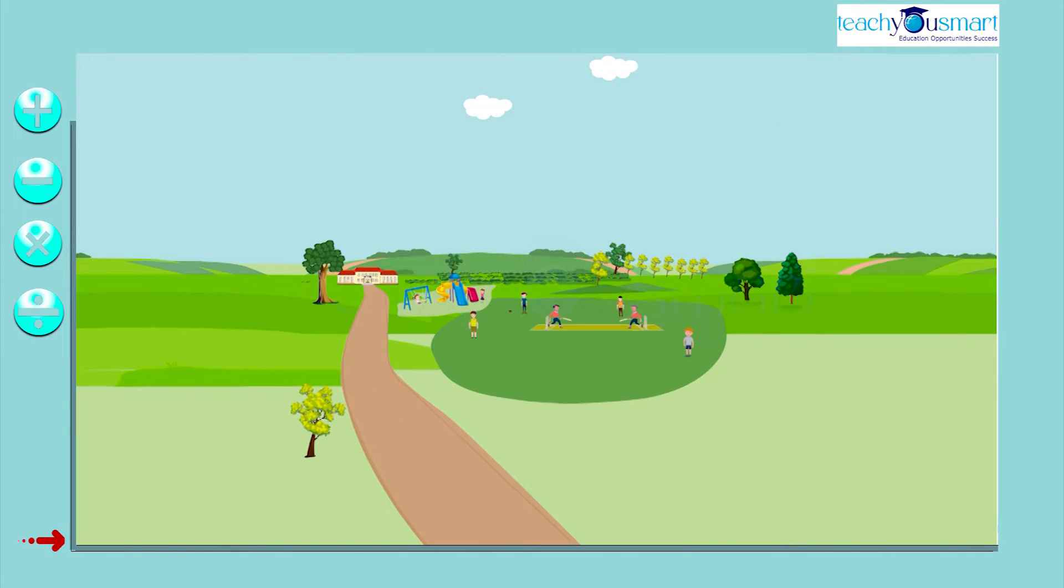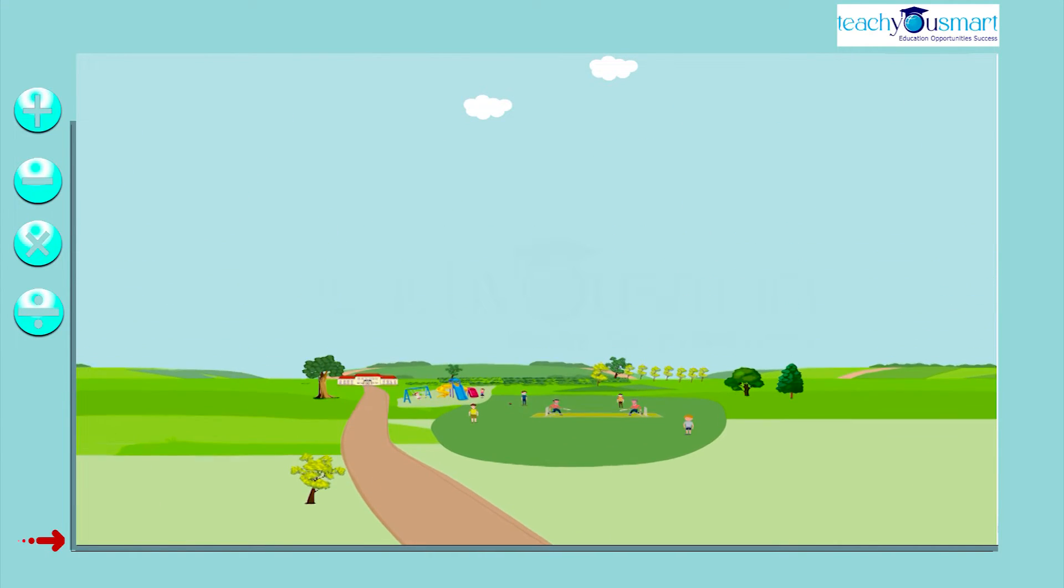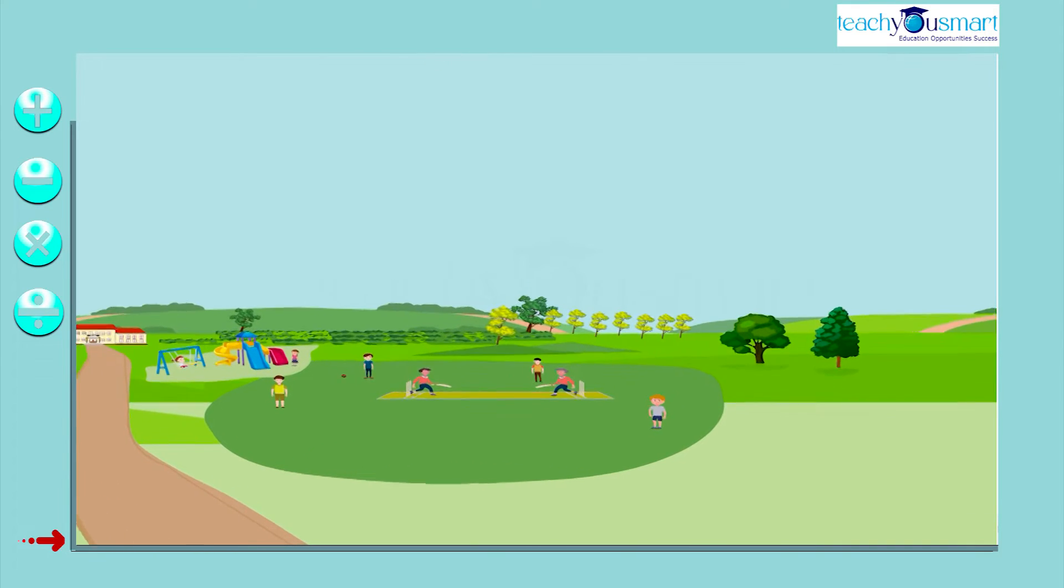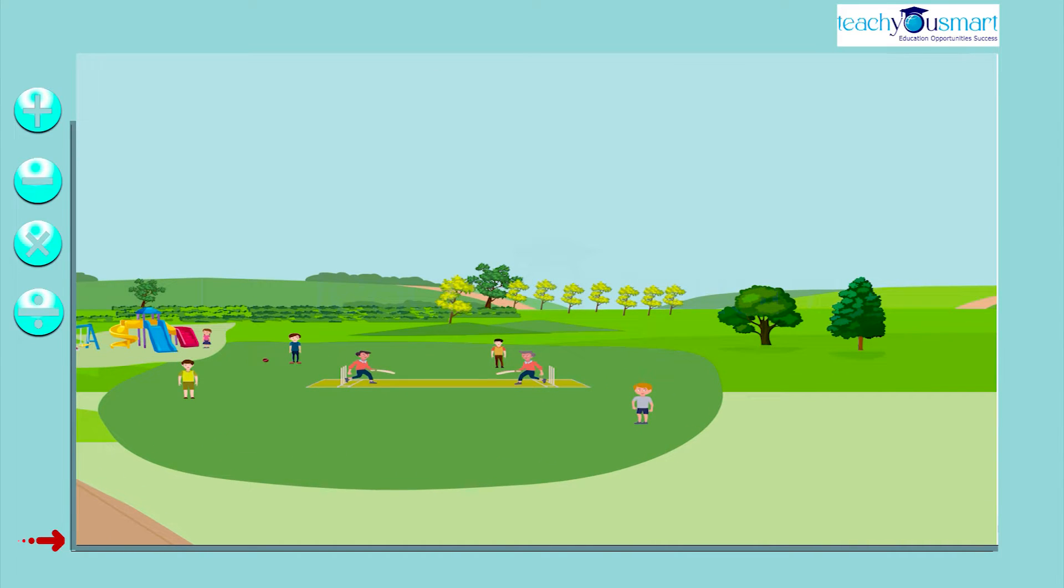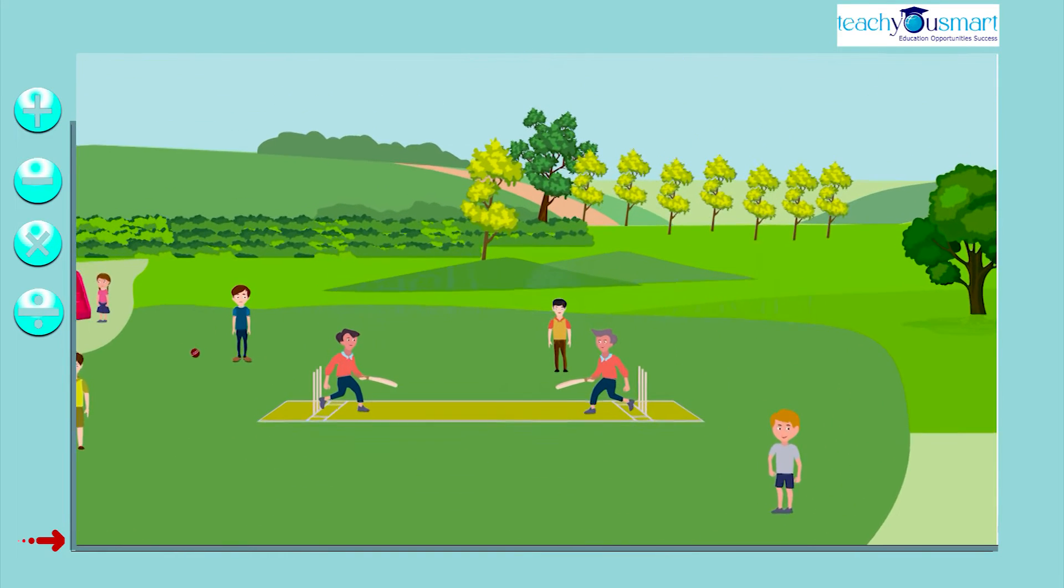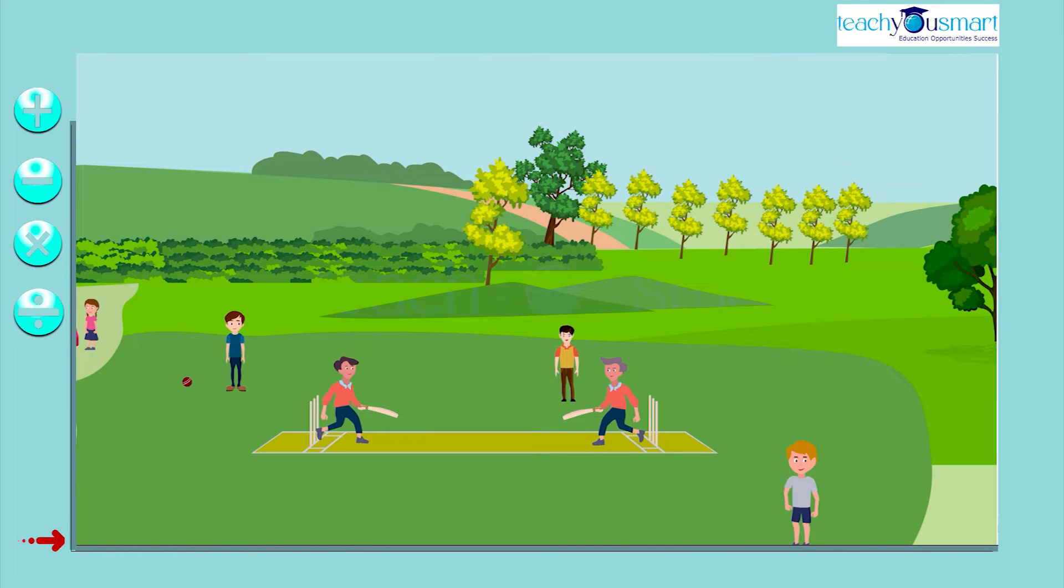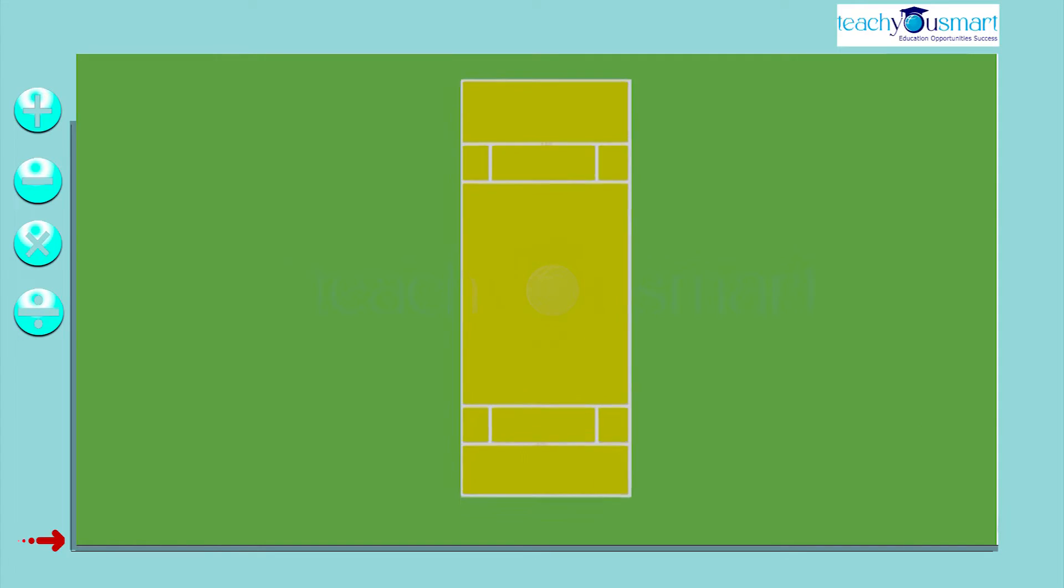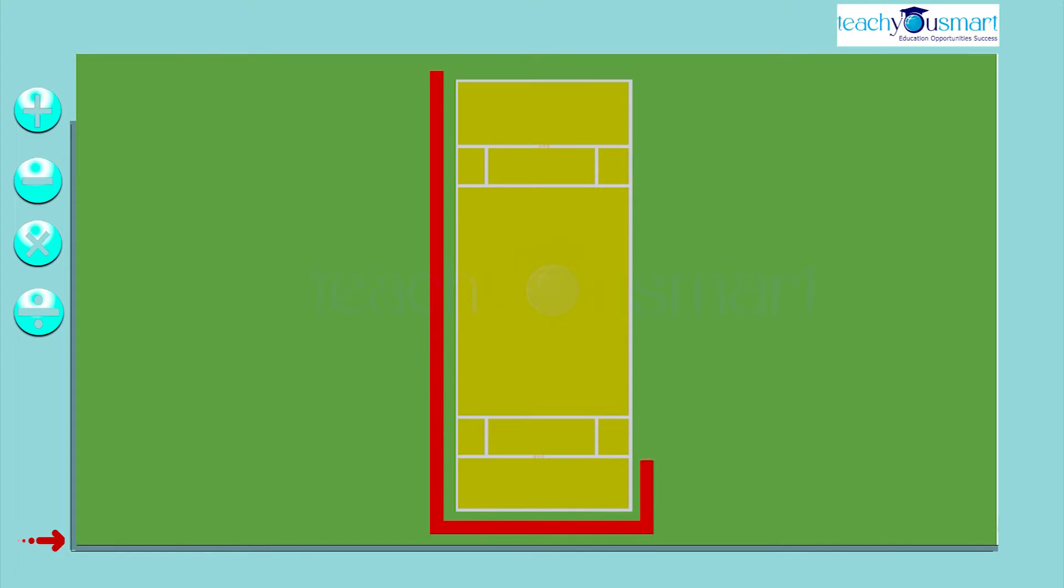We all have a playground in our school. A kind of playground is shown here. Some students are playing cricket. We can also see that two players are standing on the pitch. Let's look at the pitch more closely. It looks like a rectangle.